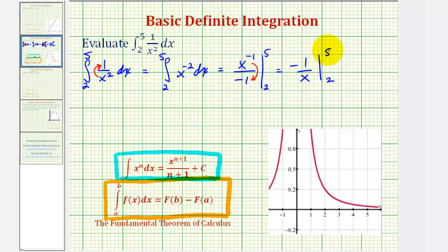So now we'll first evaluate this at five and then at two. So when x is five, we would have negative one-fifth. And then minus when x is two, we would have negative one-half. So this would be negative one-fifth plus one-half.